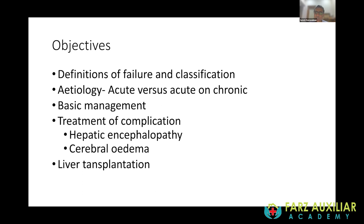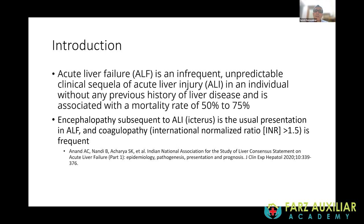The background: acute liver failure is the clinical sequelae of acute liver injury without any background liver disease. That means it's not somebody with chronic liver disease who's worsening — it is somebody who had a previously normal liver that suddenly starts failing. This is associated with a very high mortality of almost 50 to 75 percent.